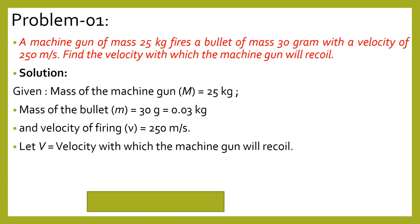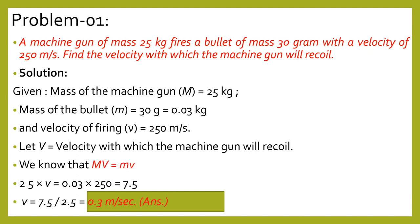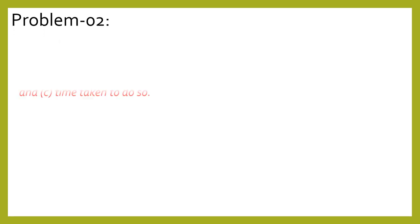Using the law of conservation of momentum, we substitute all the values and find that the velocity with which the machine gun will recoil is 0.3 meters per second. So if the machine gun is fired, the bullet goes in the forward direction and the gun recoils in the backward direction with a velocity of 0.3 meters per second.